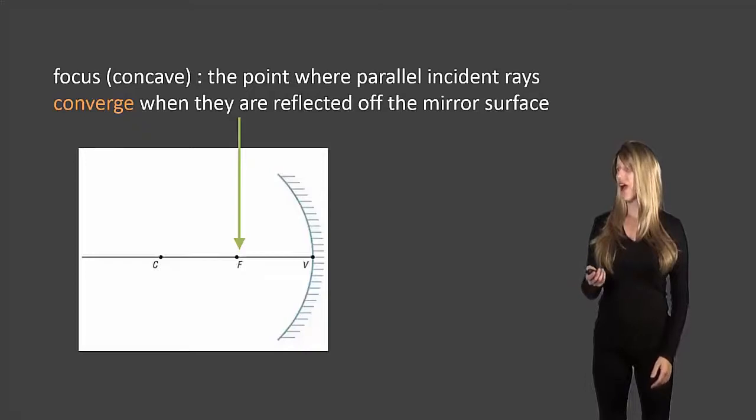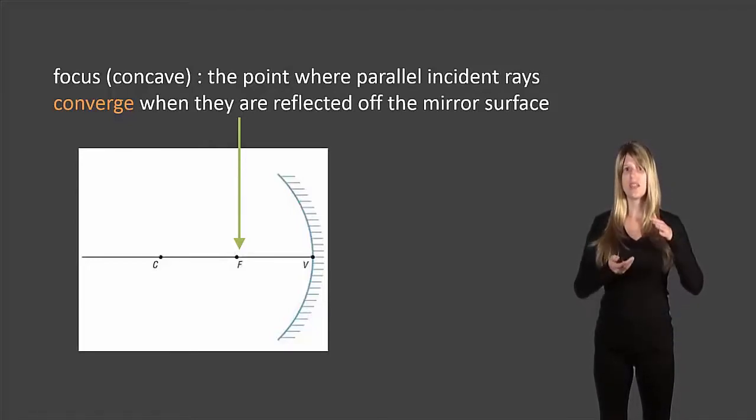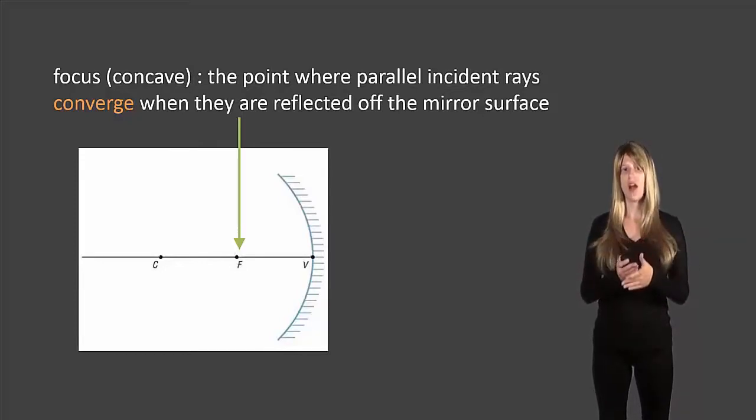So here if we have a concave mirror and we have the focus drawn in the picture there. The point where parallel incident rays converge when they are reflected off the mirror is the focus. So parallel means that they don't cross. So there are a bunch of lines that are coming towards the mirror that don't cross. They're parallel to each other. Parallel incident rays. Incident rays are the ones that come towards the mirror. Where they converge. Converge means where they cross once they are reflected off the mirror.